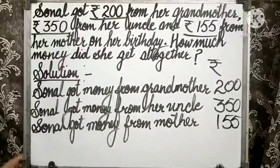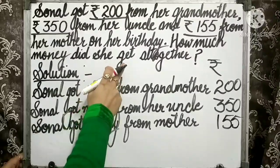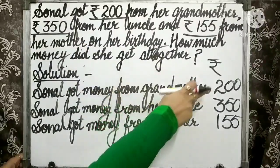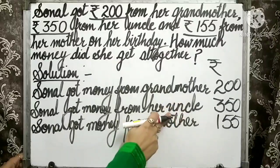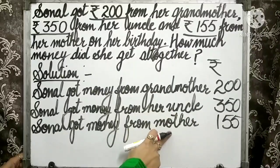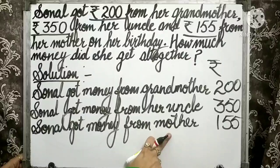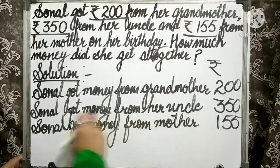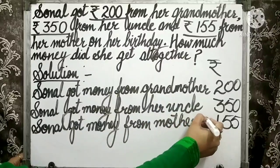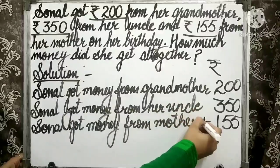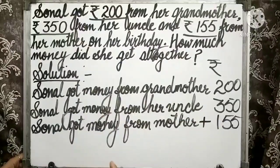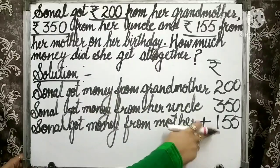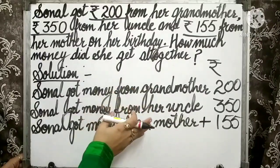Children, now you have to tell the total amount of money she got from her grandmother, her uncle, and her mother. So which operation should be done here? Yes, we need to do addition here. By adding, we can find out the total amount of money she got from all her relatives.